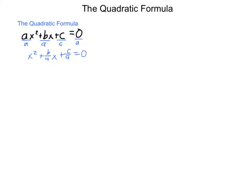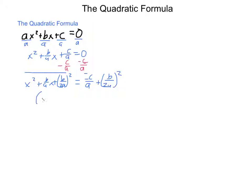I need to make it so I can complete the square, so I'm going to subtract c over a. This leaves me with x squared plus b over a times x equals negative c over a. Next, I need to fill in the space in order to complete the square. I take half of my b term, which is b over 2a, and I square it. So I'm going to add b over 2a squared to each side. Now I can factor down my left-hand side, ending up with x plus b over 2a, quantity squared, equals negative c over a plus b squared over 4a squared.